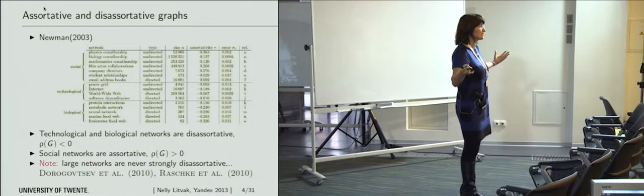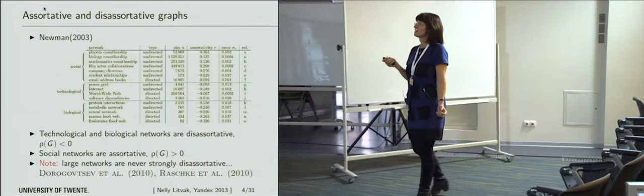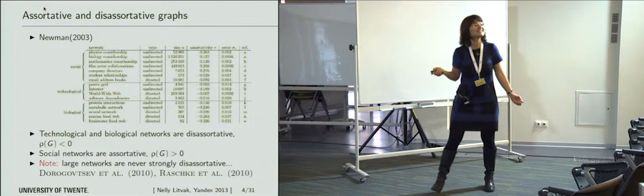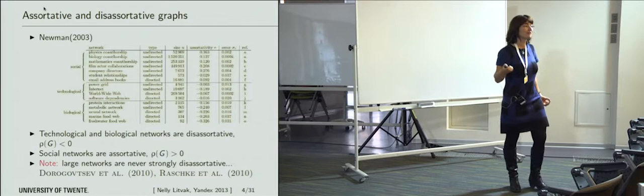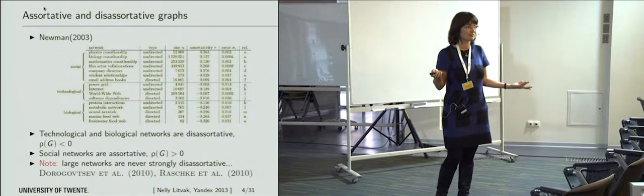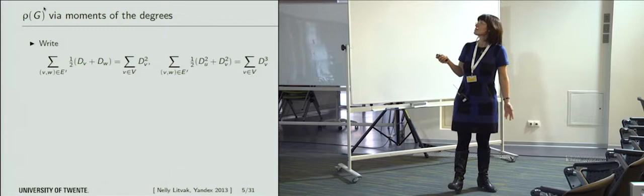Why is it not possible to have a large disassortative network? Apparently, the reason is in the measure rho itself. It was noticed by a number of people — including Sergey who is here — that something is wrong with this coefficient in the sense that it can never be strongly negative. It can never give you a large negative number.